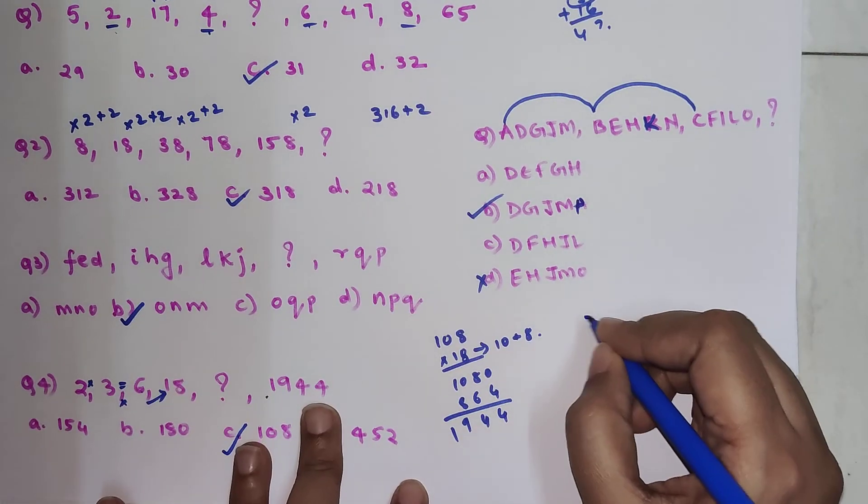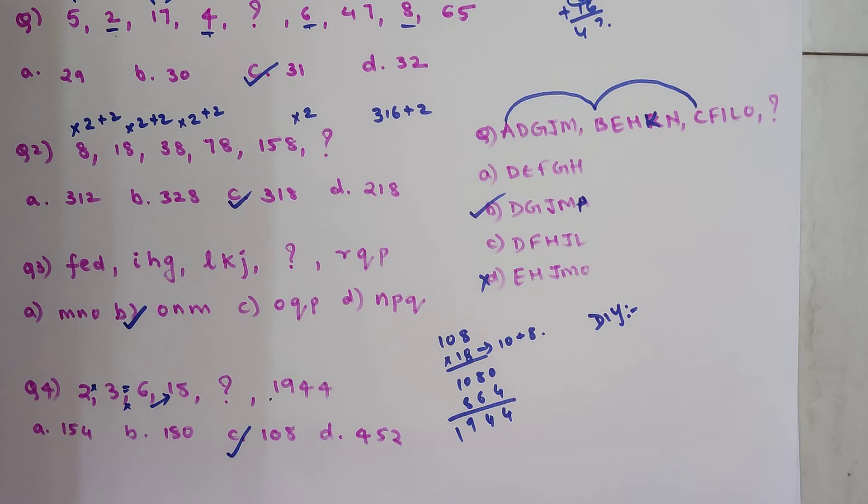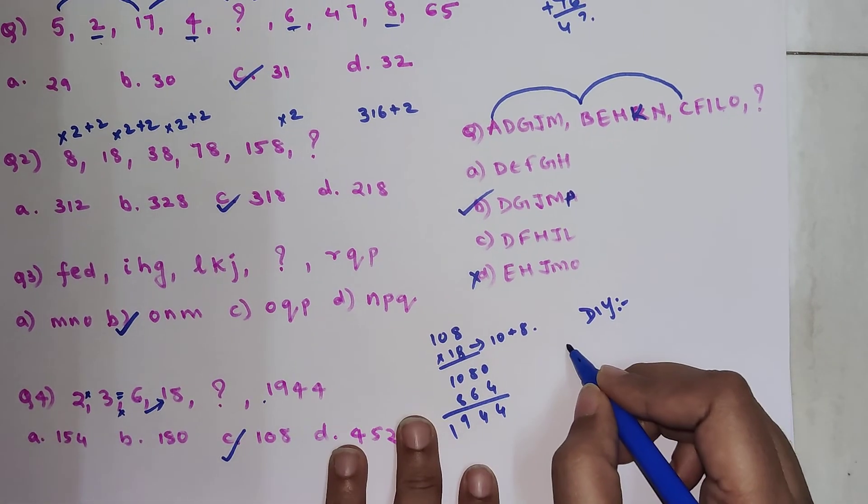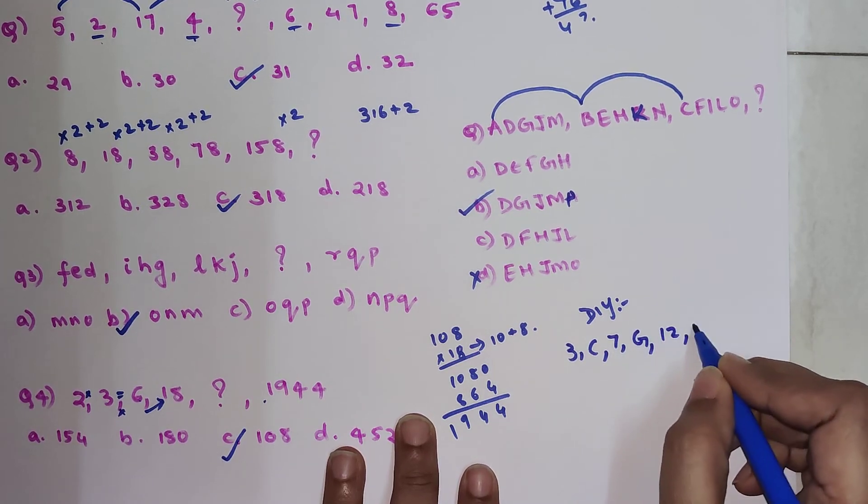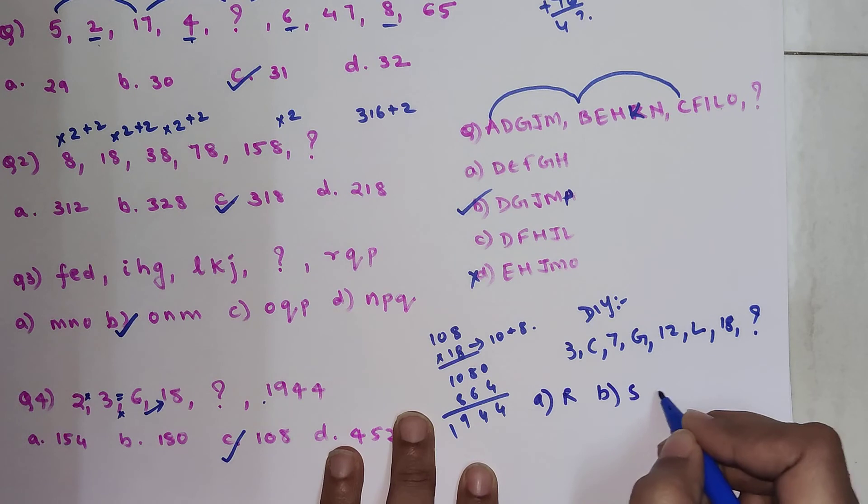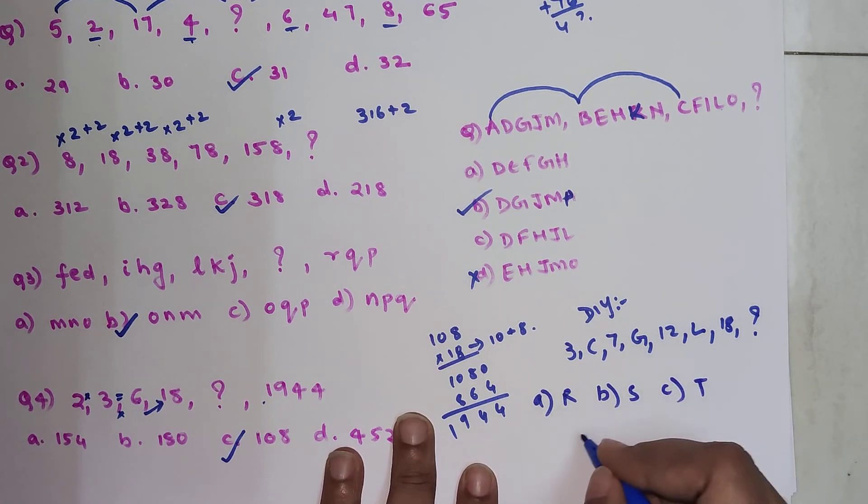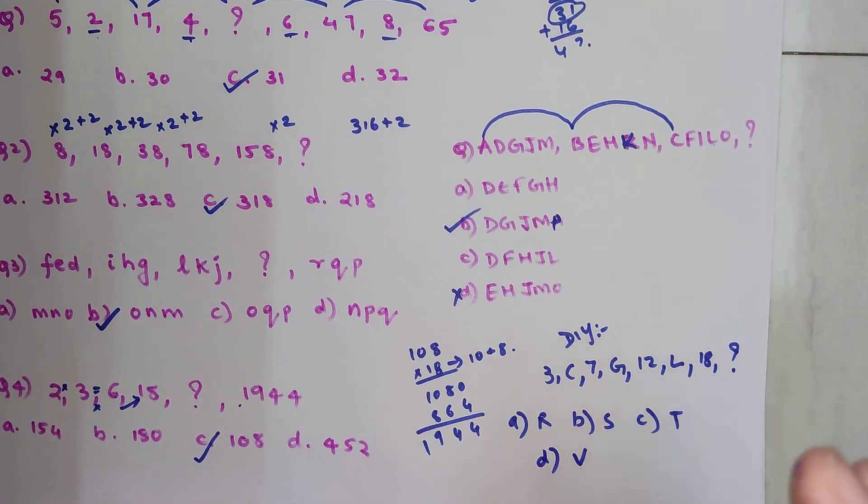Now, time for your DIY. Your DIY question is, like I said, it will be an alphanumeric series. Your question is 3 which is followed by C, then 7 followed by G, then 12 followed by L, then 18 followed by what? Your options are R, B is S, C is T, and D is letter V. Very quickly, please solve this and let me know your answers in the comment section. In case you are not able to solve it, please let me know as well. I will definitely make a separate short video of that. That's it for now. I will see you in the next video. Bye.